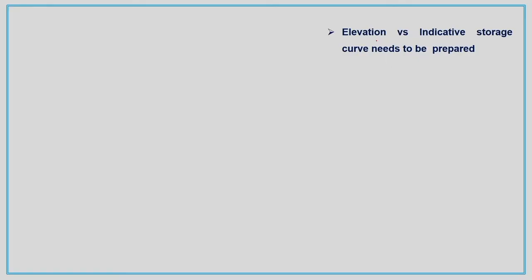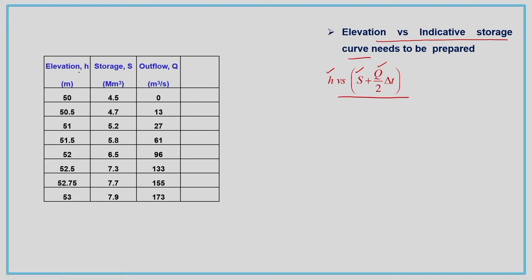First, we need to plot the elevation versus indicative storage curve. Indicative storage is S plus Q·ΔT/2, so we derive the H versus (S + Q·ΔT/2) curve. H, S, and Q are all given to us for varying elevations. Storage is in million meter cube and outflow Q is in meter cube per second, so careful unit conversion is required while calculating the indicative storage.